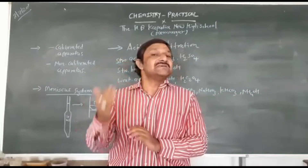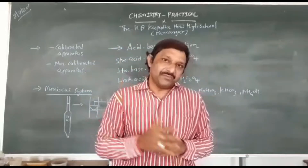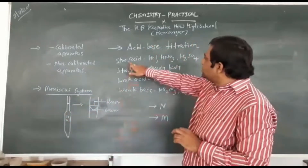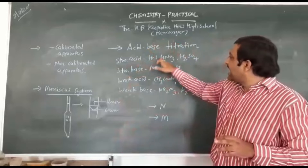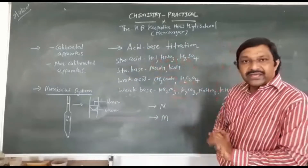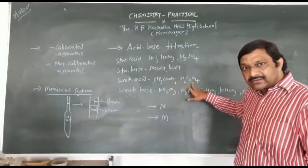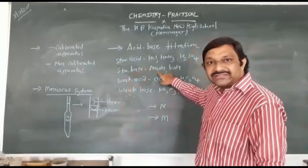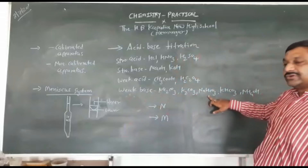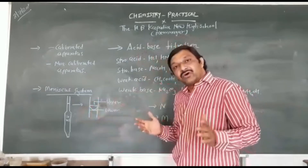In acid and base there are two parts: one is strong acid and second one is weak acid. Same way in base, one is strong base and second one is weak base. Strong acid examples: HCl, HNO3, and H2SO4 — hydrochloric acid, nitric acid, and sulfuric acid. Weak acid examples: acetic acid and oxalic acid. Strong base: NaOH. Weak base: Na2CO3, K2CO3, NaHCO3, KHCO3, NH4OH.